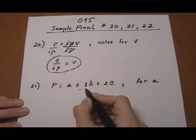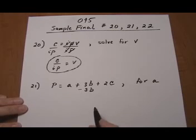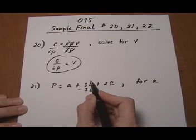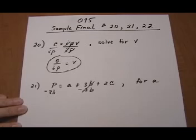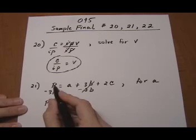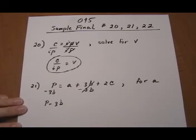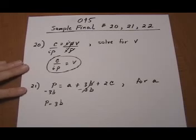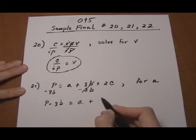So let's start by subtracting the 3B. If we subtract the 3B over here, it'll cancel out and give us a zero, but we need to subtract it on the other side. And because these are not like terms, we have to just write it out the way it is, P take away 3B. There's nothing else we can do to it. And then write down whatever's left over, A plus 2C.